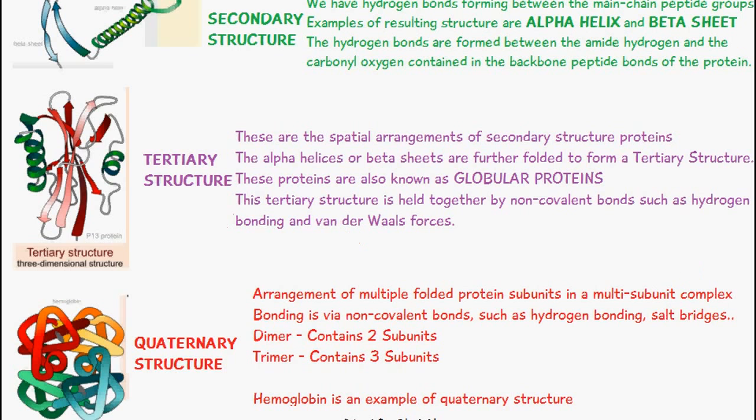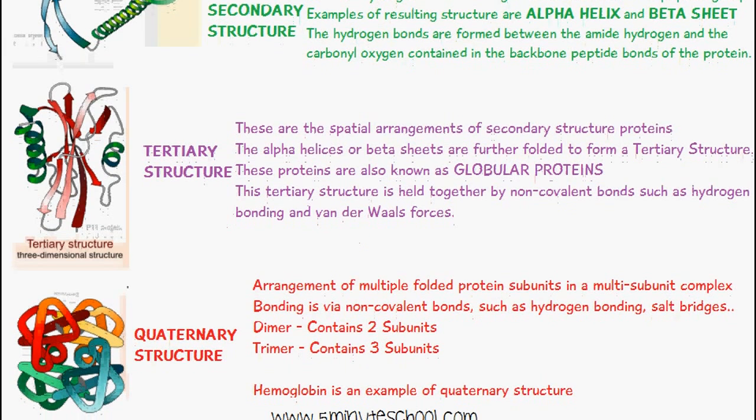Finally, we have the quaternary structure of proteins. That's the arrangement of multi-folded protein subunits in a multi-subunit complex, and the bonding is via non-covalent bonds such as hydrogen bonding and salt bridges. We have a dimer which consists of two subunits which make up the quaternary structure, and we have a trimer which consists of three subunits.